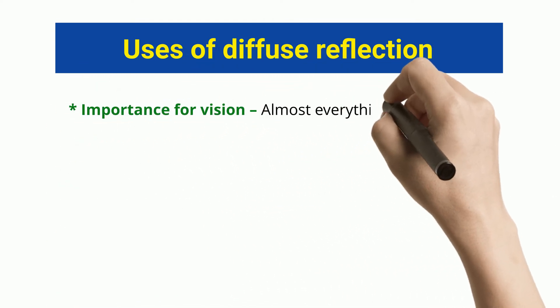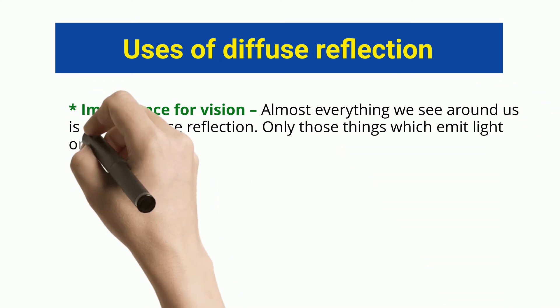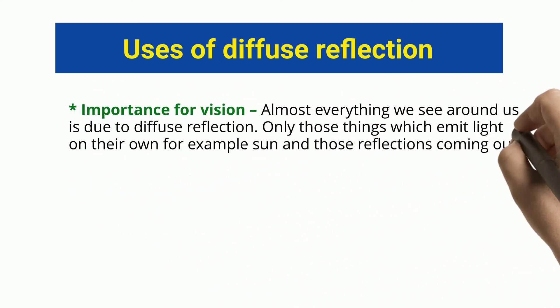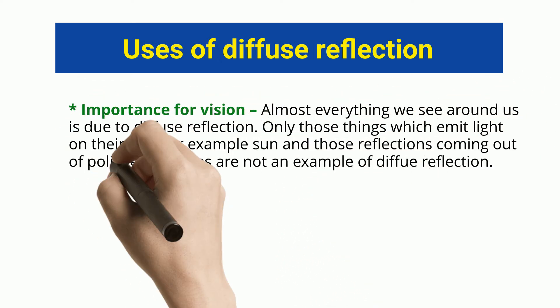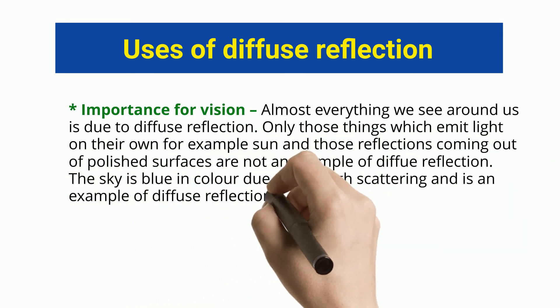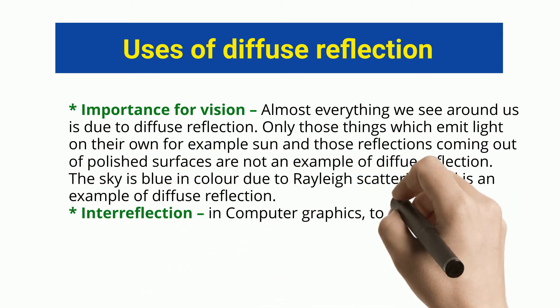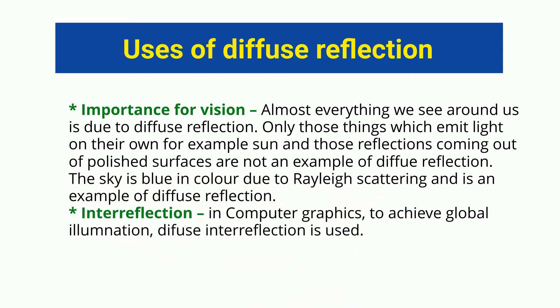Importance for vision: almost everything we see around us is due to diffuse reflection. Only those things which emit light on their own — for example, the sun — and reflections coming out of polished surfaces are not examples of diffuse reflection. The sky is blue in color due to Rayleigh scattering, and is an example of diffuse reflection. In computer graphics, diffuse inter-reflection is used to achieve global illumination.